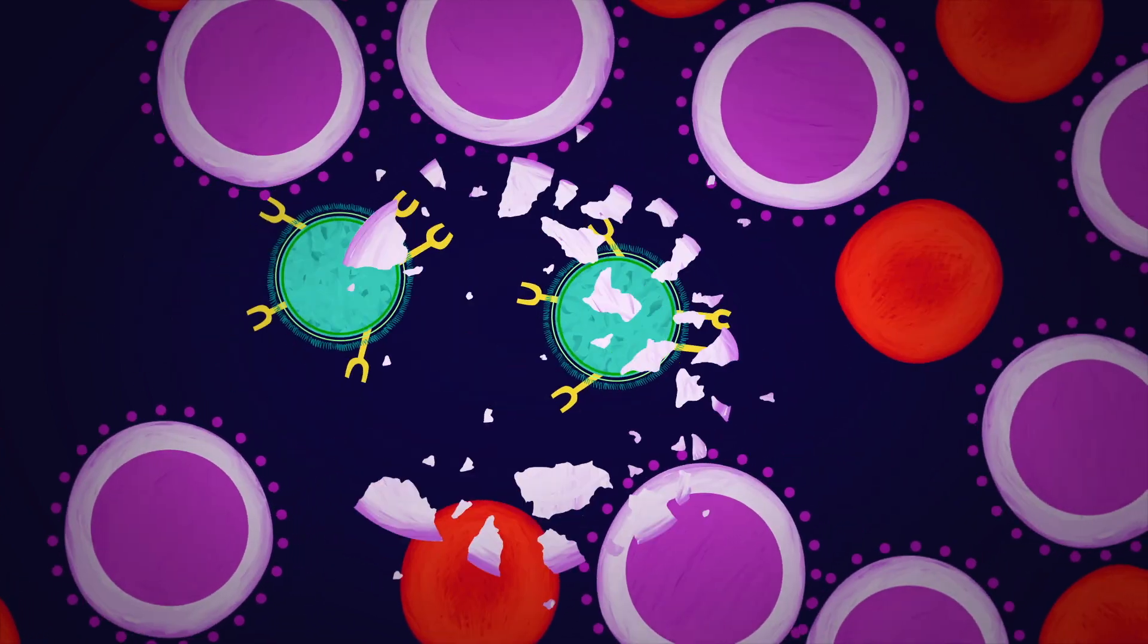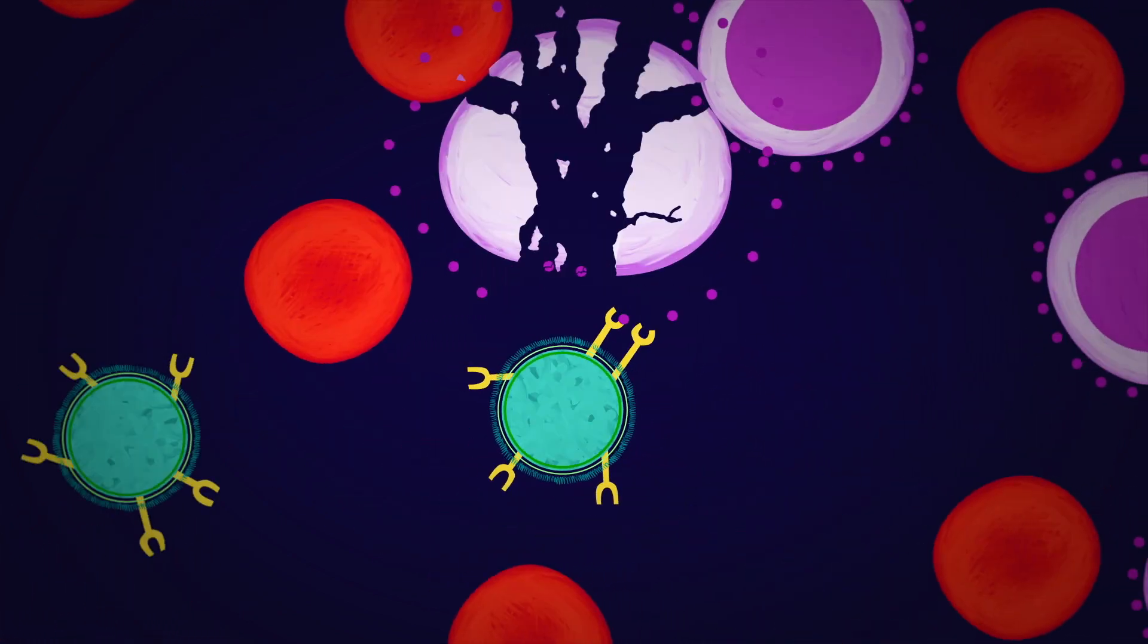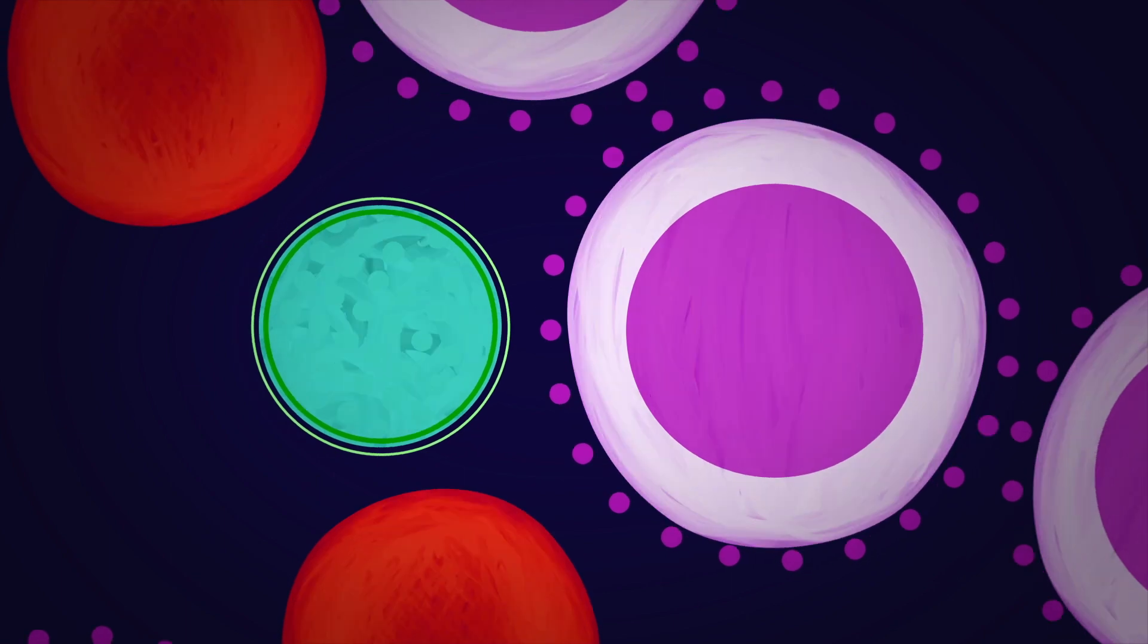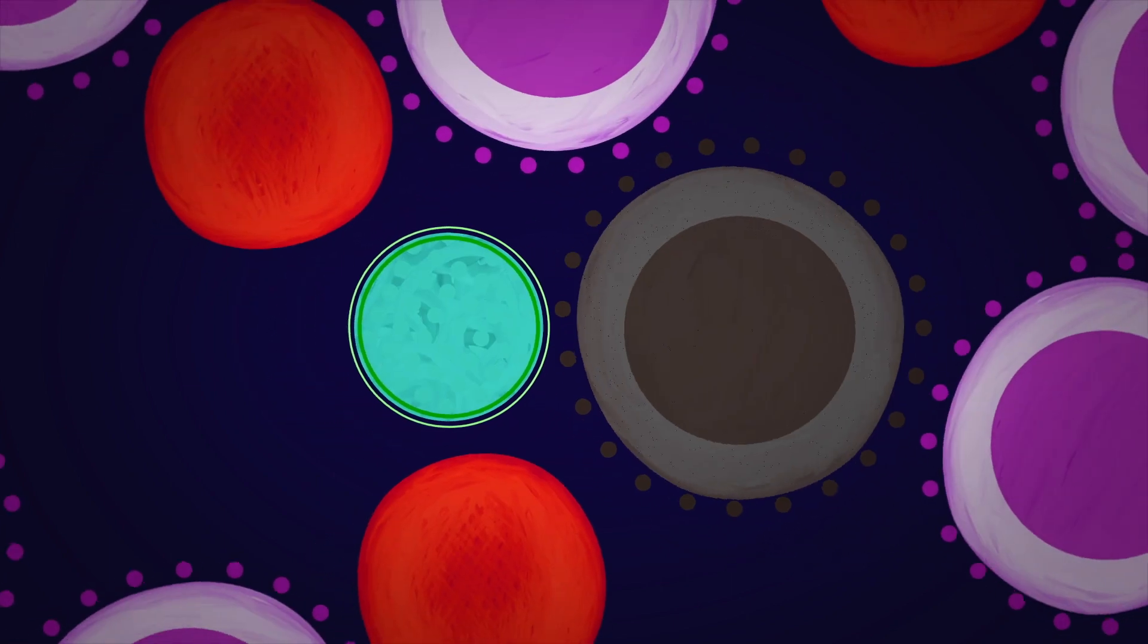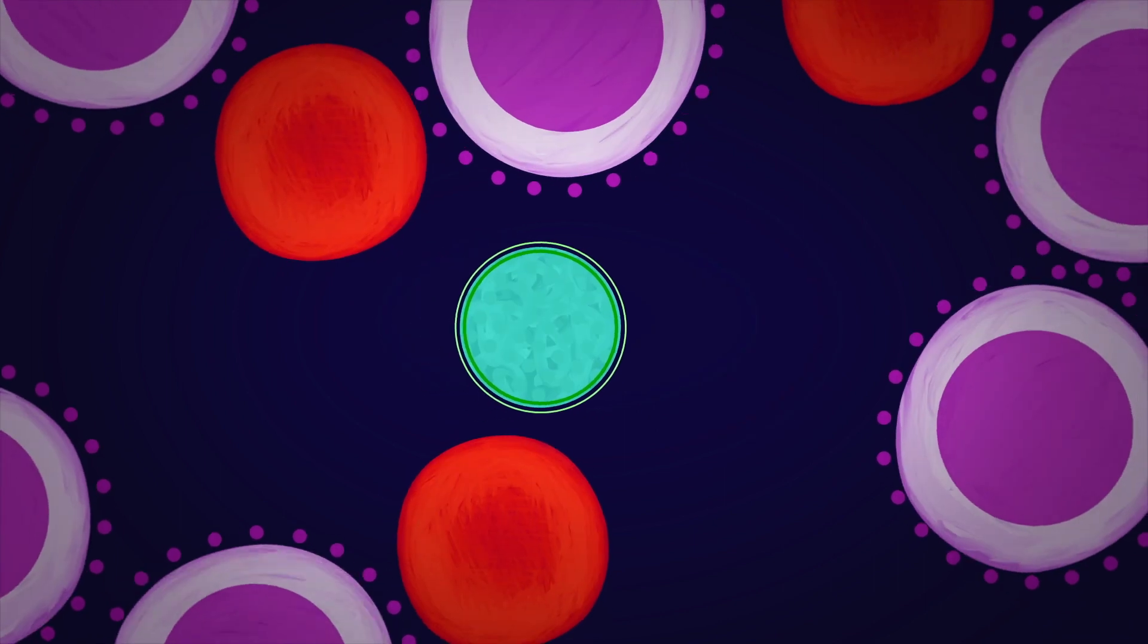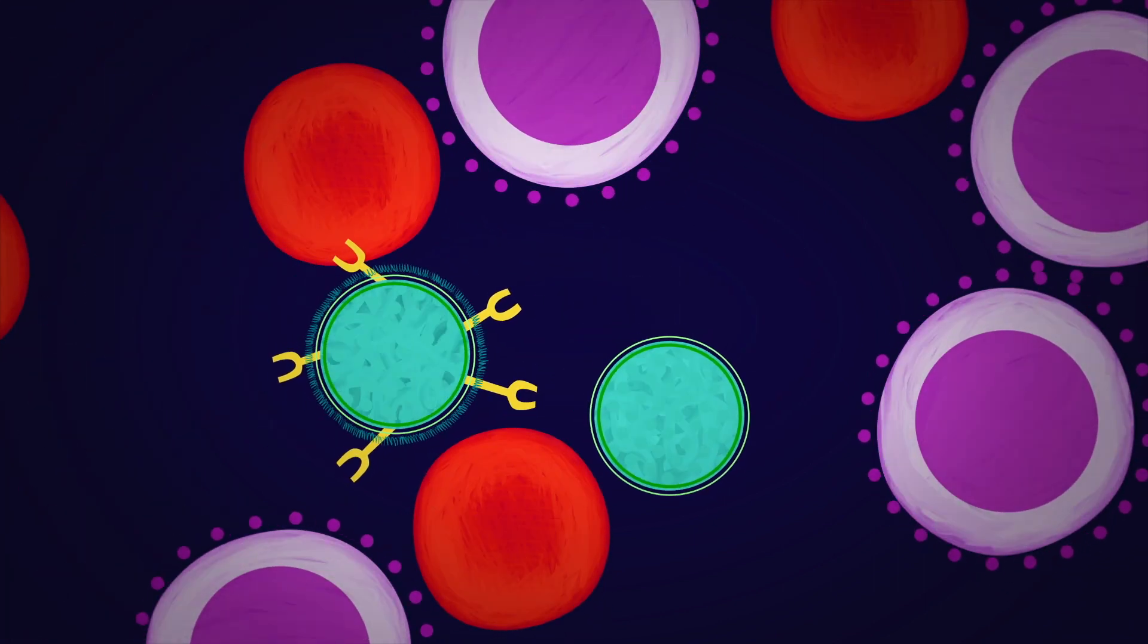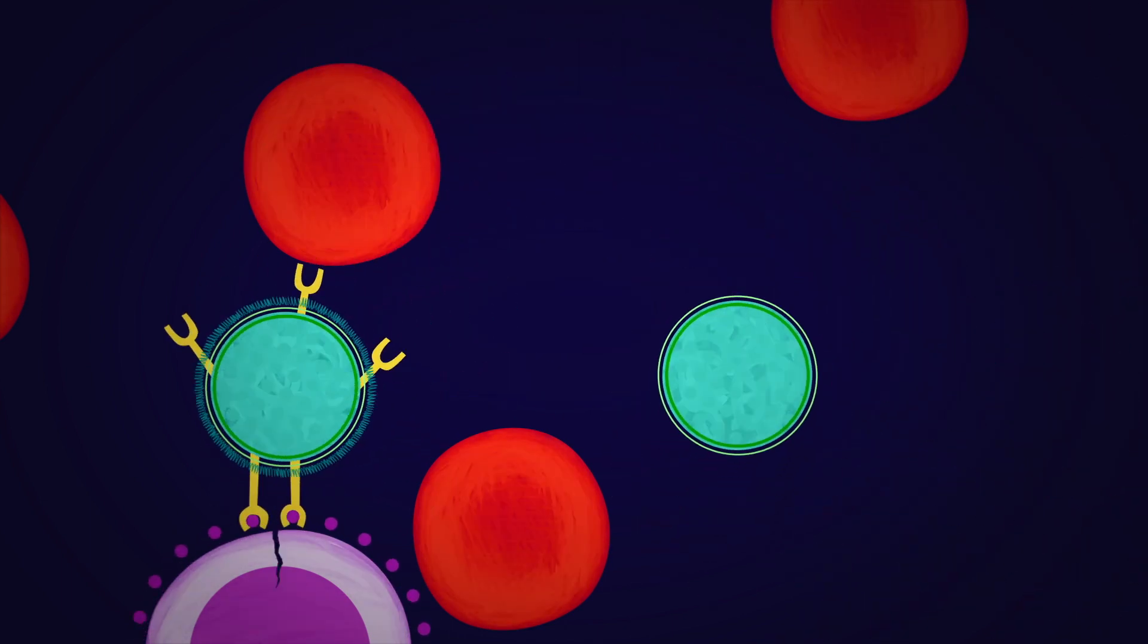CAR T cells are like Navy SEALs. They are quick and precise in their action of killing cancer cells. Regular T cells work in one-to-one fashion. So if there is one cancer cell, one T cell will eliminate that cancer cell. CAR T cells have the ability to kill many more cancer cells.